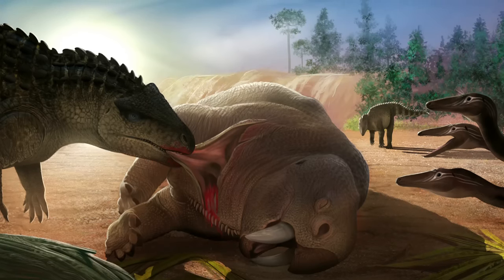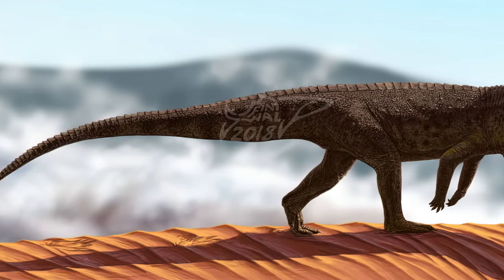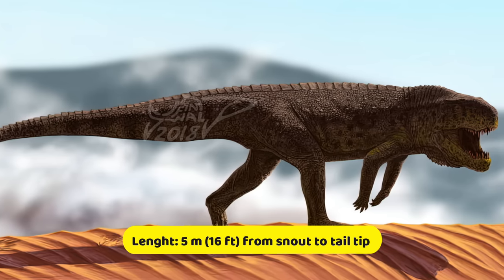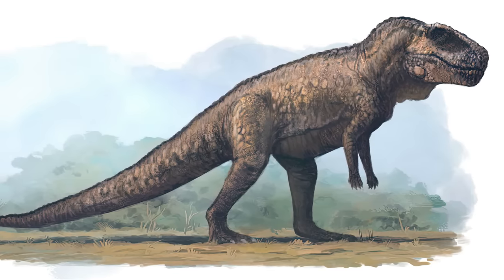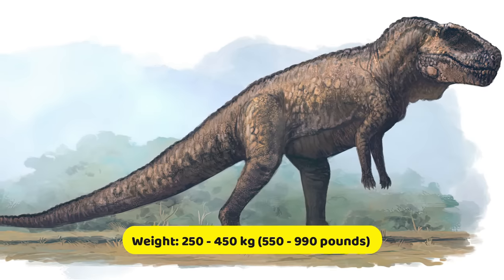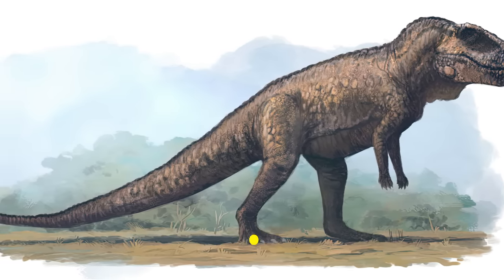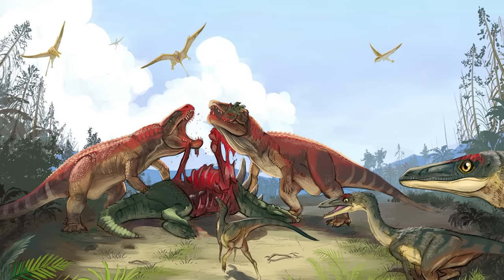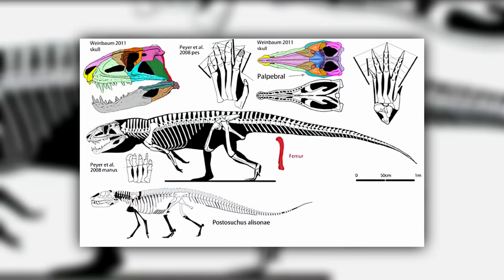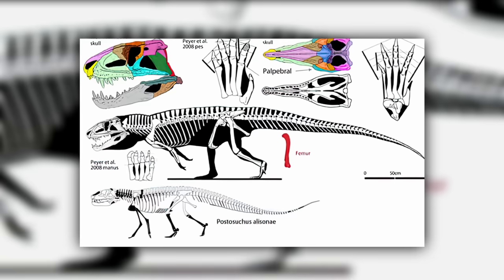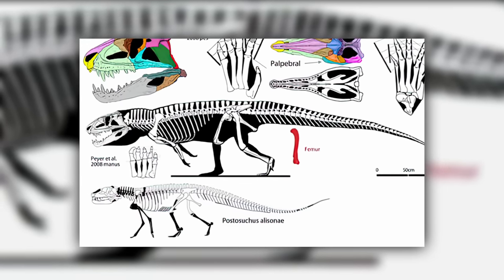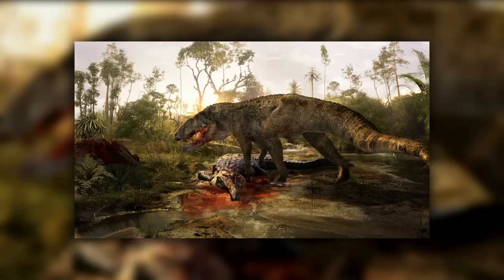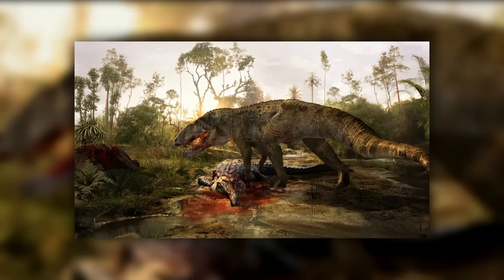Postosuchus was one of the largest carnivorous reptiles during the late Triassic. Adults reached around 1.2 meters, or 3.9 feet in height, 5 meters or 16 feet in length from snout to tail tip, and their mass might have ranged from 250 to 450 kilograms. It had a massively built skull bearing dagger-like teeth. The neck was elongated, expanding to a short torso and long tail. Paleontologists also identified osteoderms — thick plates forming scales — on its back, neck, and possibly above or under the tail. Its crocodile-like ankle joint discouraged fast running.